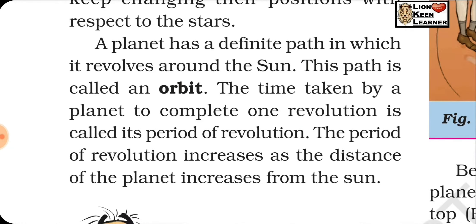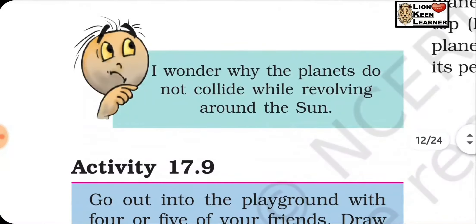The time taken by a planet to complete one revolution is called its period of revolution. The period of revolution increases as the distance of the planet from the sun increases — as the distance grows, the time period also increases.